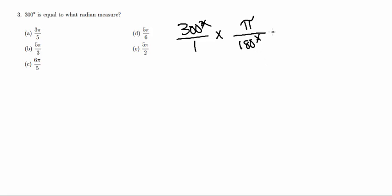So in this case, I'm going to go ahead and just multiply straight across, and I'm going to get 300 pi over 180. And now all I'm going to do is just simplify this fraction.